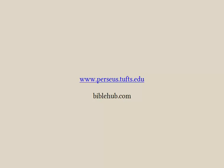Here's a summary of what we've seen in this video. We've begun our exploration of third declension nominals, starting with stems that end in a consonant — specifically the first set of such endings with the square of stops. In the next video, we'll take a look at further patterns in the third declension that have stems ending in other consonants.